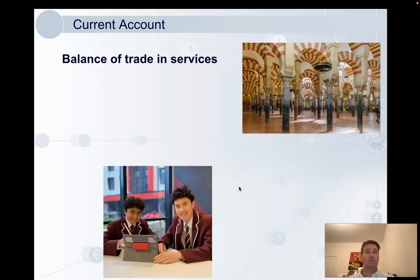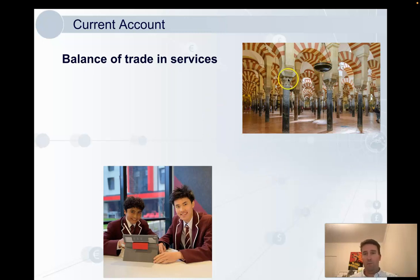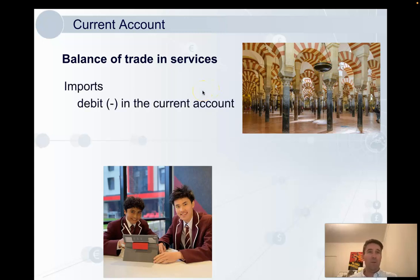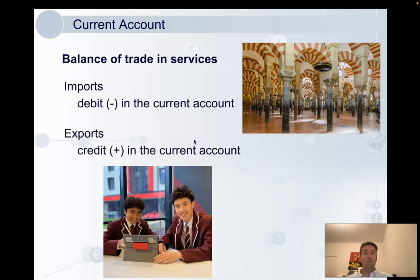Also in the current account is the balance of trade in services — so goods and services. An import of services occurs generally when we pay for services overseas. A common example is tourism: when I travel to see the beautiful mosque/cathedral in Cordoba in Spain, it gets entered as a debit in the current account because the money leaves Australia for overseas. An export of services — the biggest export service by far is education. International students who come to our universities count as an export, and that's a credit into the current account.